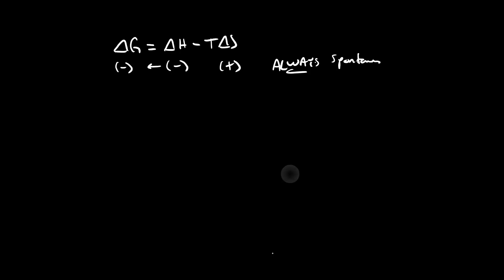However, if we have a positive delta H and a negative delta S, both of these correspond to unfavorable contributions to the reaction — endothermic and creating order. So these will both combine together to give us a delta G that's always positive, which is never spontaneous.